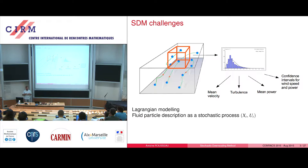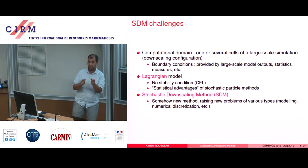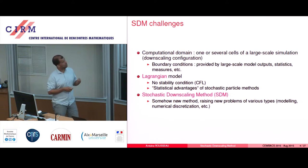The computational domain is one or several cells of a large-scale simulation. We downscale using boundary conditions from the large-scale model, and inside our domain we use this Lagrangian model, which has no explicit stability condition. Crucially, to obtain error bars you don't need to run the code many times with different boundary or initial conditions and do sensitivity analysis — you can do this directly, thanks to the stochastic nature of the model.